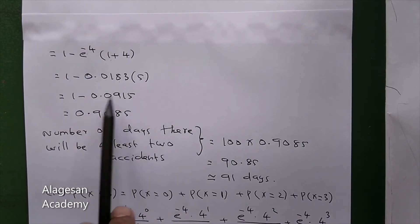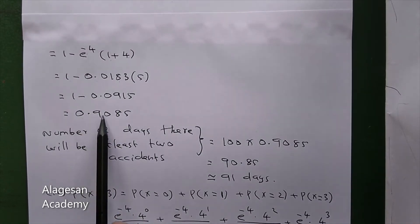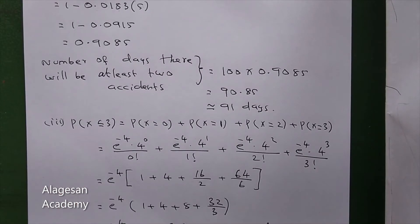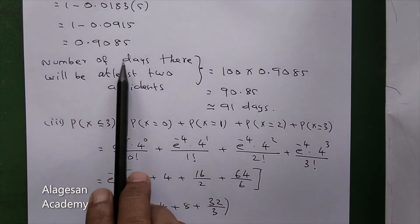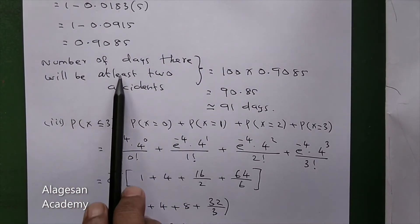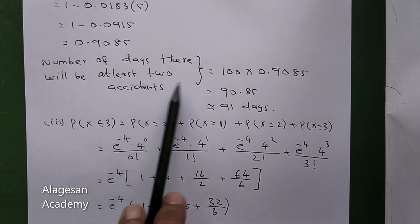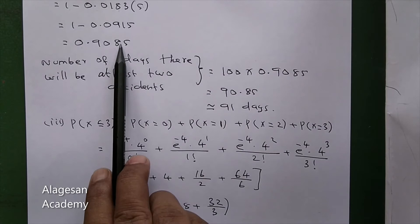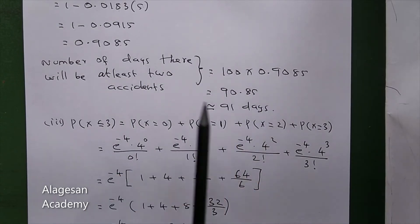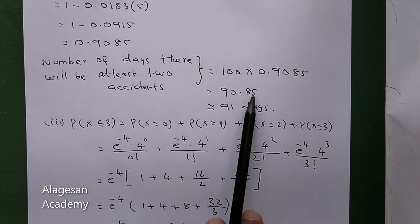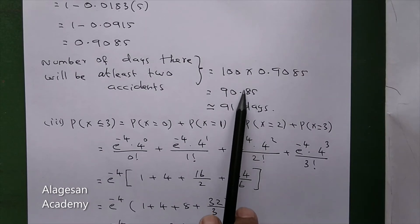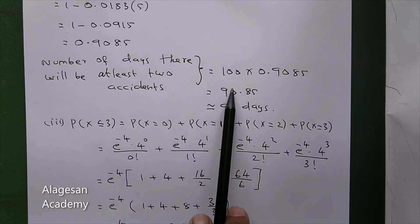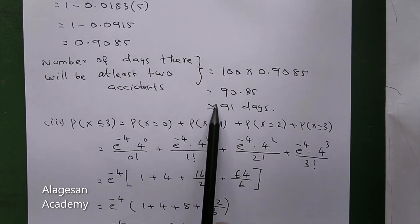1 minus 0.0915 equals 0.9085. This is the probability. Number of days there will be at least 2 accidents equals 100 into 0.9085, giving 90.85, approximately 91 days.